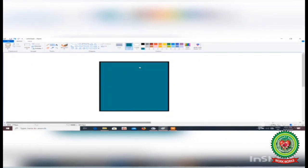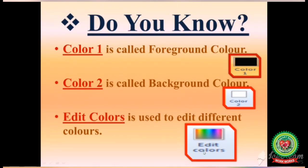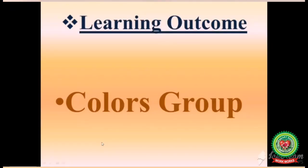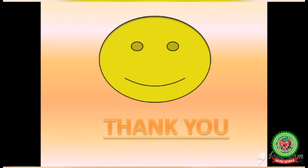Students, today we have learned how to use the colors group. Color 1 is called the foreground color, Color 2 is called the background color, and edit colors is used to create or edit different colors. The colors group is used to select color for drawing. Hope you understood today's class. Practice the colors group on your computer for better understanding. Thank you and have a nice day.